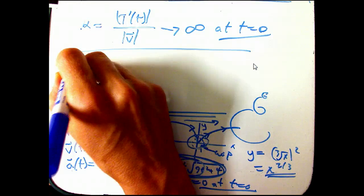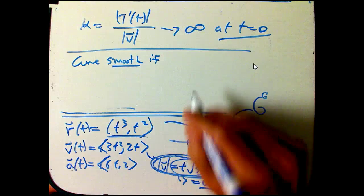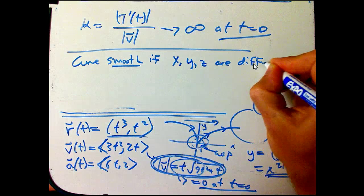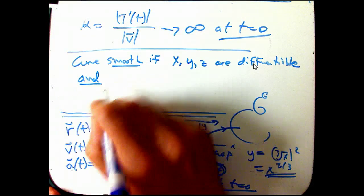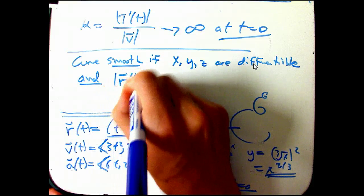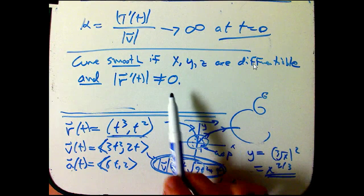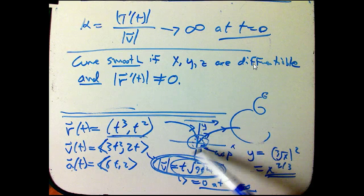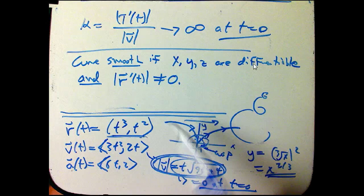The upshot is that we call a curve smooth if two things are true: x, y, and z must be differentiable functions, and the speed must never be zero. If the speed can be zero, we could very easily get behavior like a cusp. One point of view is that the calculus breaks down if done carefully; another is that the curvature blows up, going to infinity when speed goes to zero.